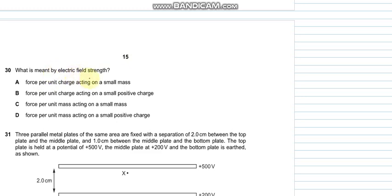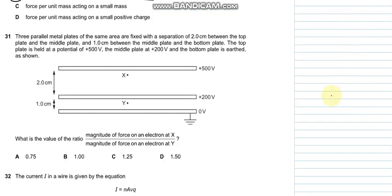Question number 30 says what is meant by electric field strength. Electric field strength is the force per unit charge acting on a small positive charge, so B is the appropriate answer. Question number 31 says that three metal plates are shown, the distance between them are shown, electrons at x and y are given, and the voltages are given.